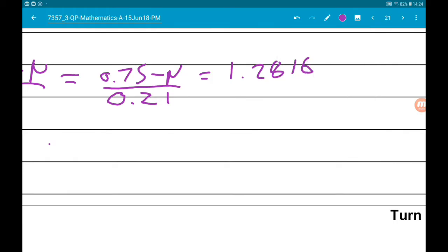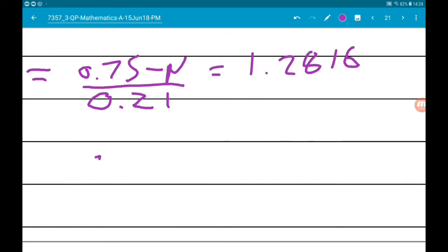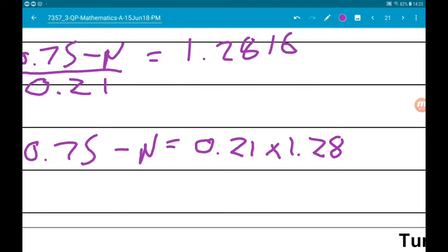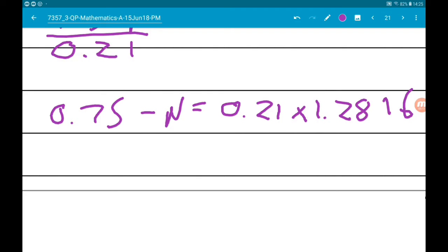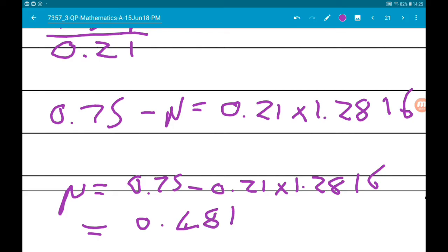If we multiply both sides by 0.21, we get 0.75 minus mu is 0.21 times 1.2816. Therefore, we add mu and take the right hand side away, we get mu is 0.75 minus 0.21 times 1.2816, which gives us 0.481.